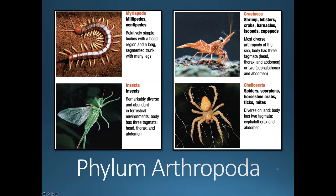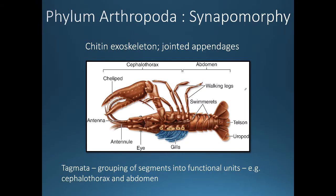Let's move on to the phylum Arthropoda, which includes four major groups: millipedes and centipedes; crustaceans such as shrimps, lobsters, crabs, barnacles, isopods, and copepods; insects; and arachnids — spiders, scorpions, horseshoe crabs, ticks, and mites. Synapomorphies of arthropods include an exoskeleton made of chitin, jointed appendages used for walking, and tagmata — the grouping of segments into functional units such as the cephalothorax and abdomen.